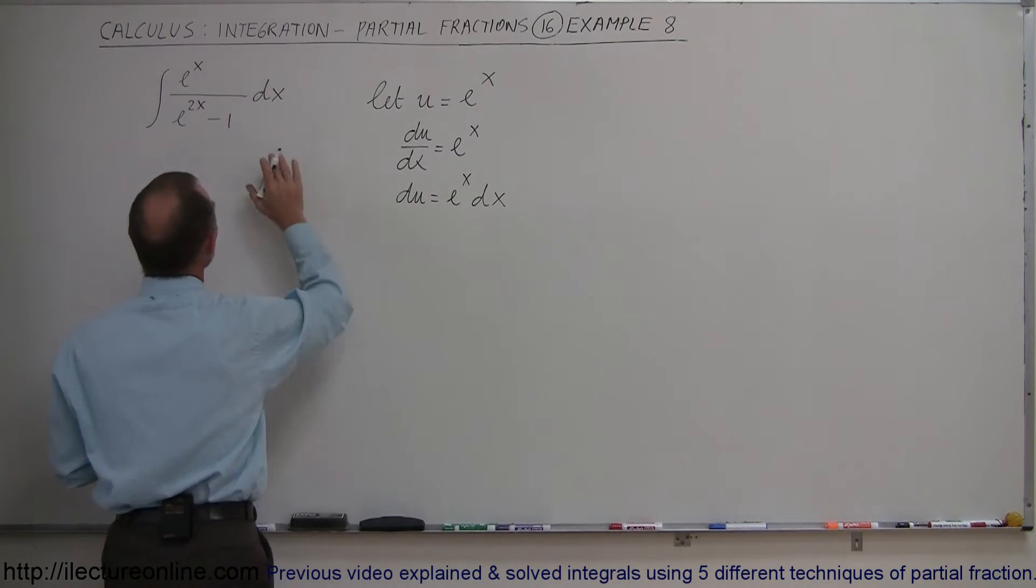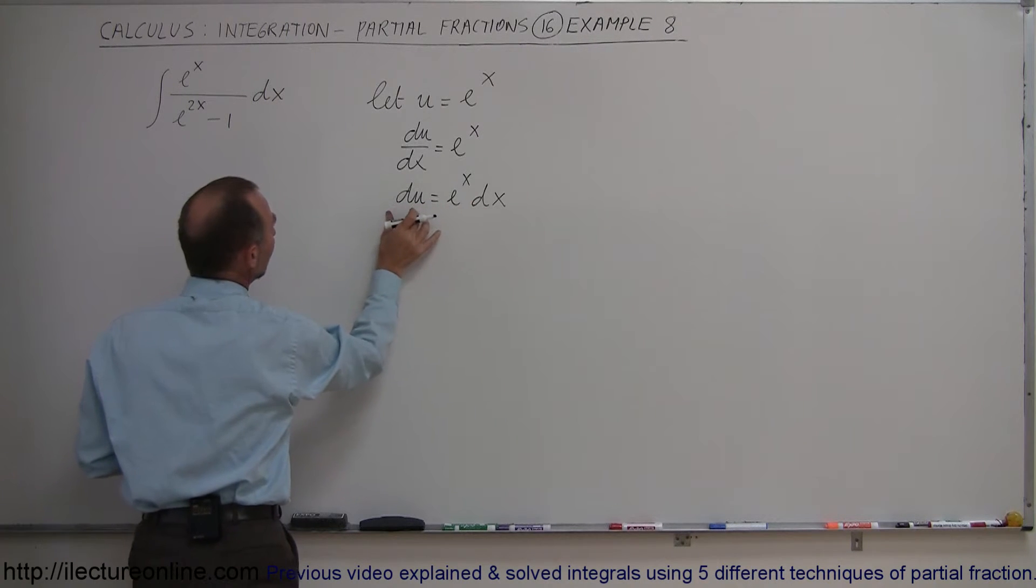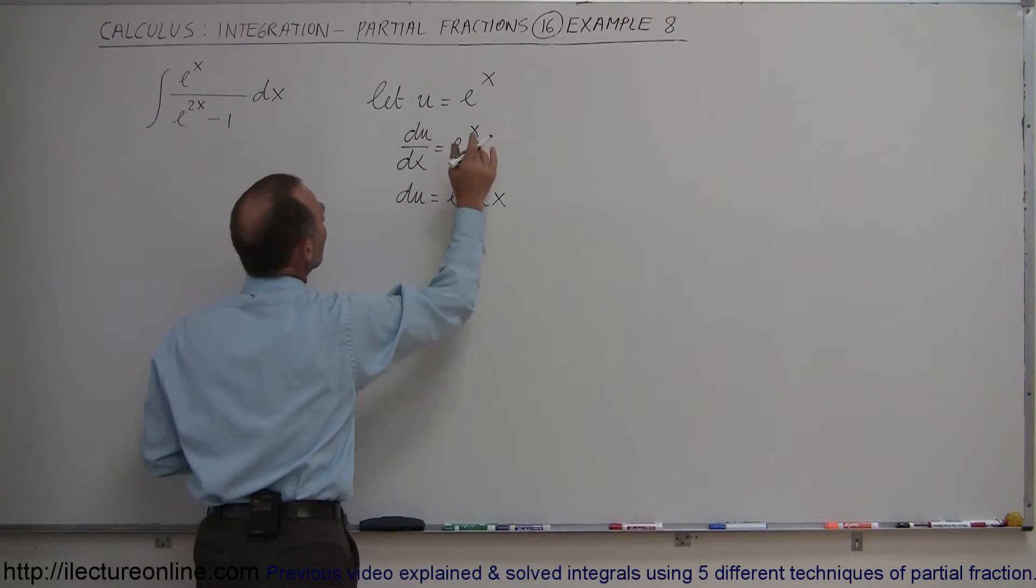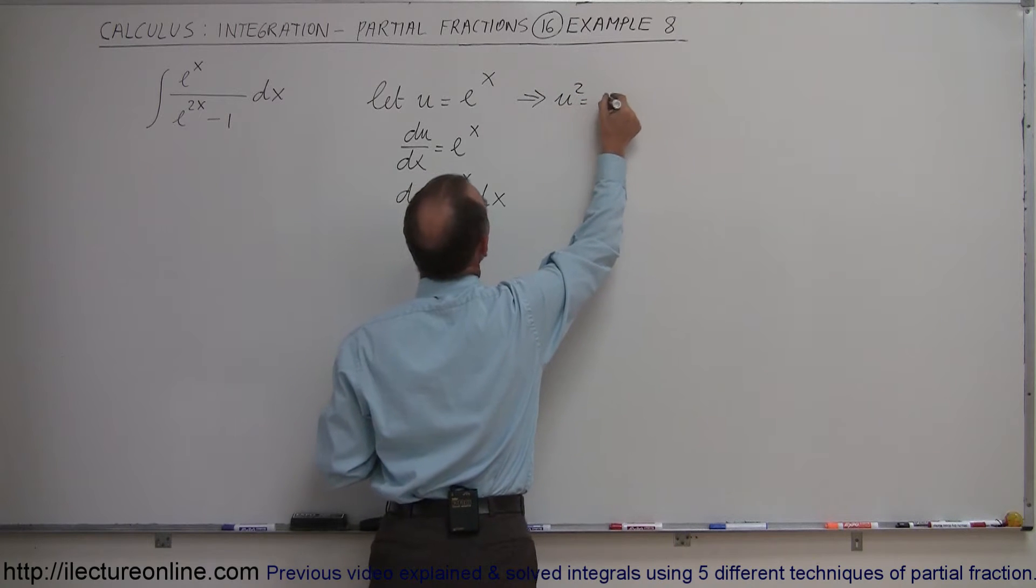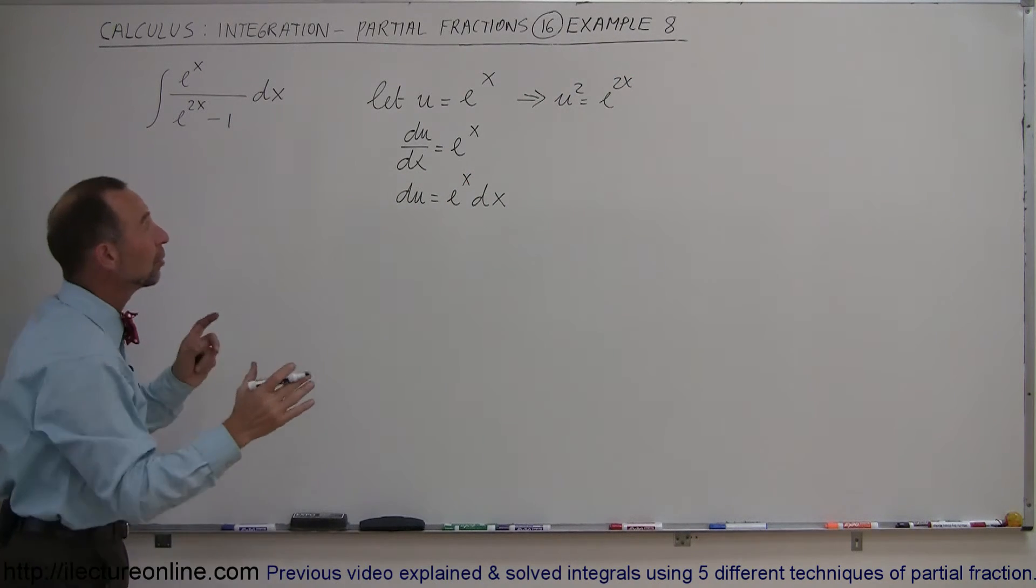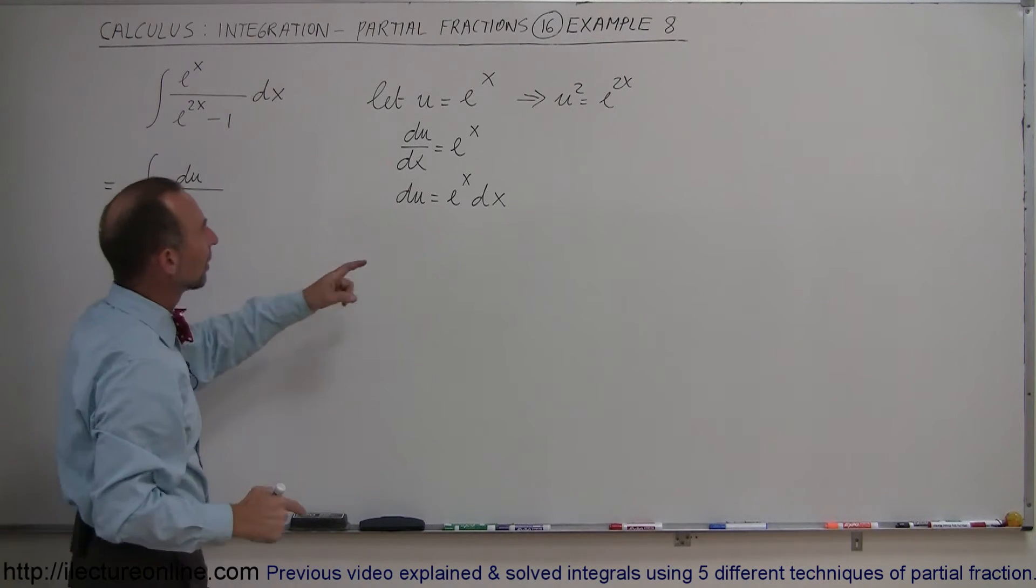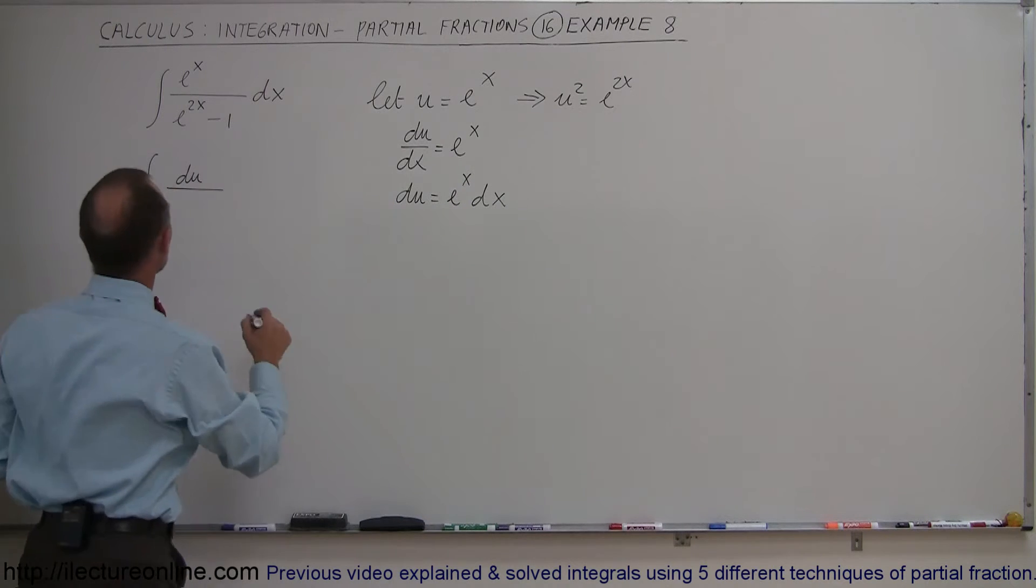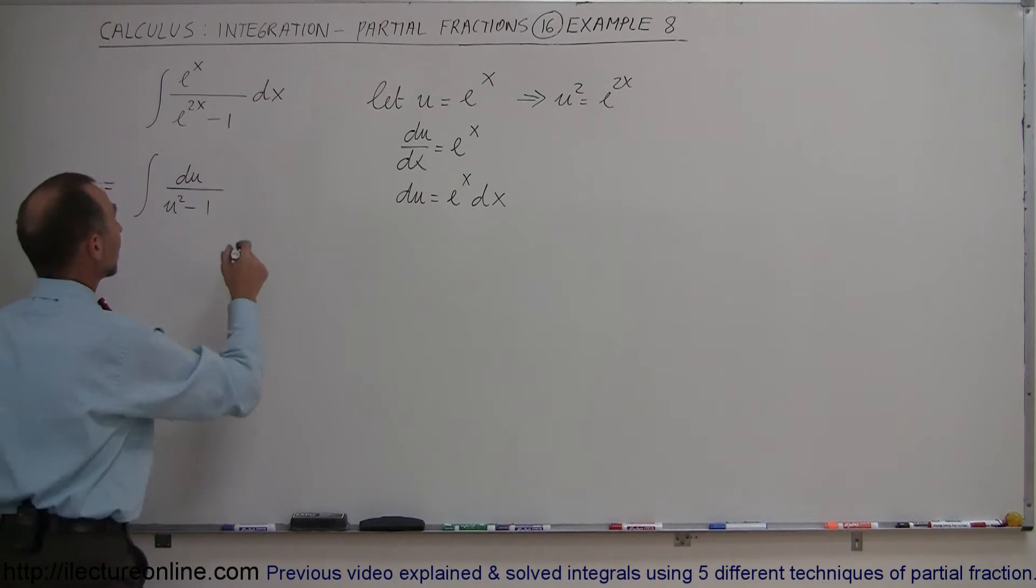Now look in the numerator. I have e^x dx which can be replaced by du. If u = e^x, then u² = e^2x by squaring both sides. Now I can substitute: instead of e^x dx, I write du in the numerator, and instead of e^2x, I write u².